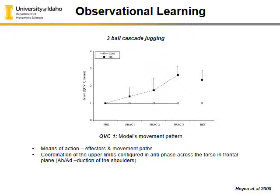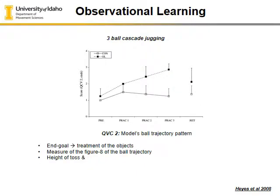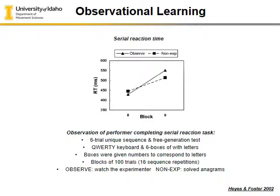These scores show again the observational learning benefit in practice and retention for these individuals. It's based on the coordination of the limbs and the torso in the frontal plane — that is what this score measured. Participants were able to better orient their limbs to catch the ball in the juggling motion. Another measure is the figure-eight trajectory of the ball, which is essential in the scoring of juggling.